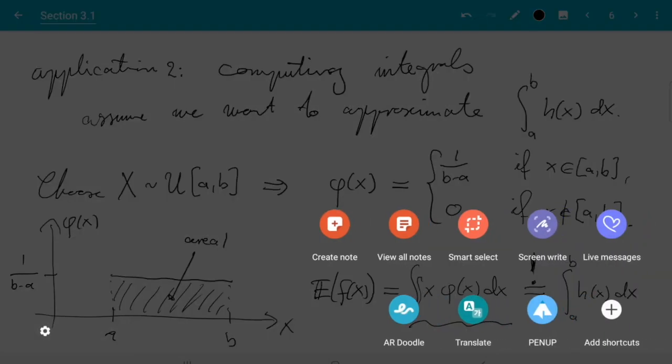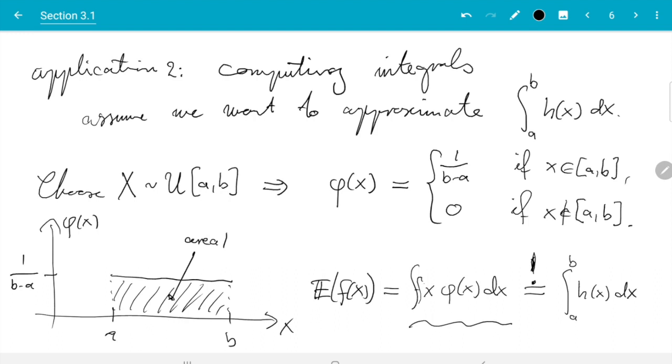What this does is on the left hand side in this expression, phi is 0 if we are not in the interval a to b. So that means outside the interval a to b whatever we have is multiplied by 0, so it doesn't count. This integral effectively is going over the interval a to b. And now we just need to make it so that f times phi inside the interval equals h.